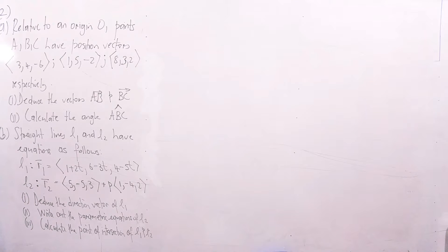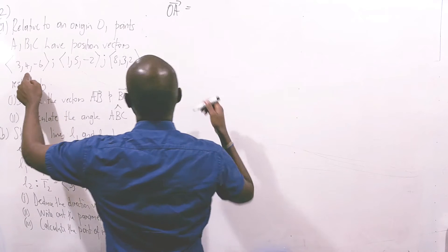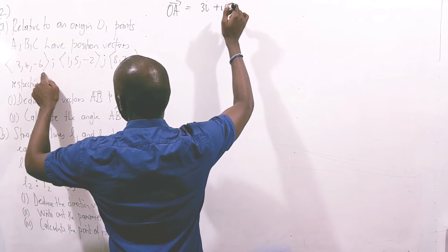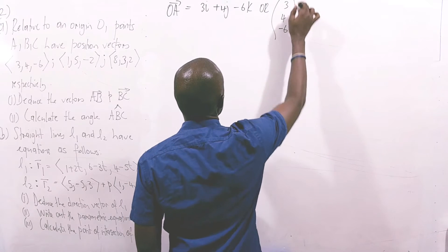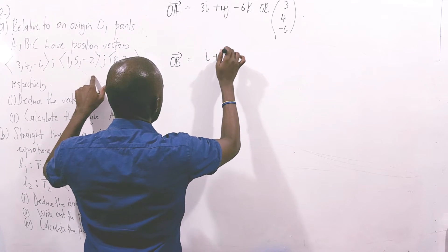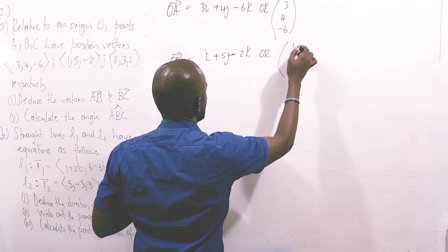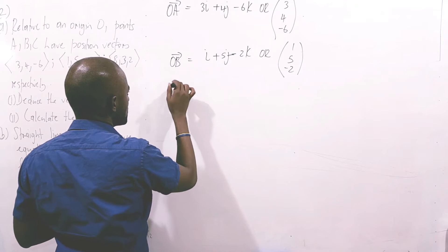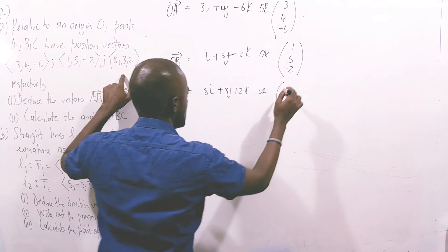We'll start with part A. We're given the position vectors of A, B, and C, and we'll express them using column vector form and also using the i, j, k notation. The position vector OA equals 3i + 4j - 6k, or in column vector form: (3, 4, -6). OB equals i + 5j - 2k, or (1, 5, -2). And OC equals 8i + 3j + 2k, or (8, 3, 2).